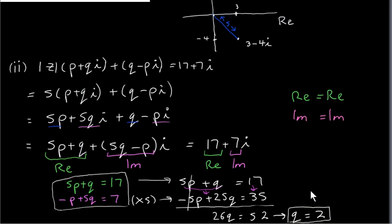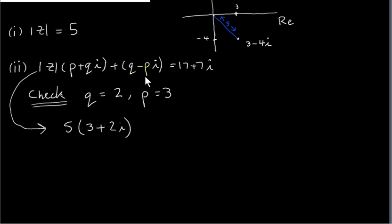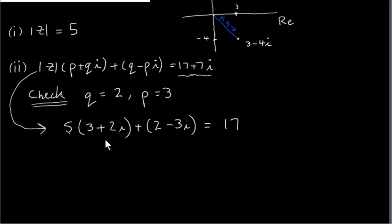With q found, we can find p. Using the equation minus p plus 5 times q equals 7, plugging in q equals 2 gives minus p equals 7 minus 10, which is minus 3, so p equals 3. I'll do a quick check: replacing q with 2 and p with 3, we have 5 times 3 plus 2i plus 2 minus 3i. That gives 15 plus 2 is 17, and 5 times 2i minus 3i is 10i minus 3i, which is 7i. So we get 17 plus 7i, which checks out.